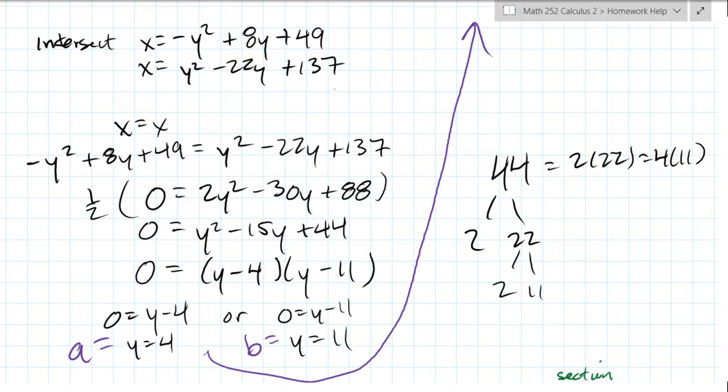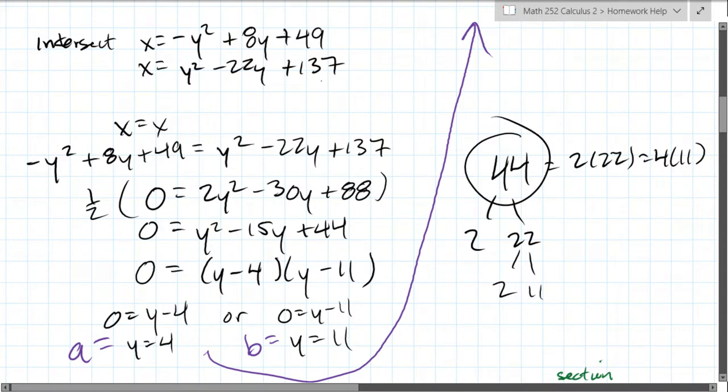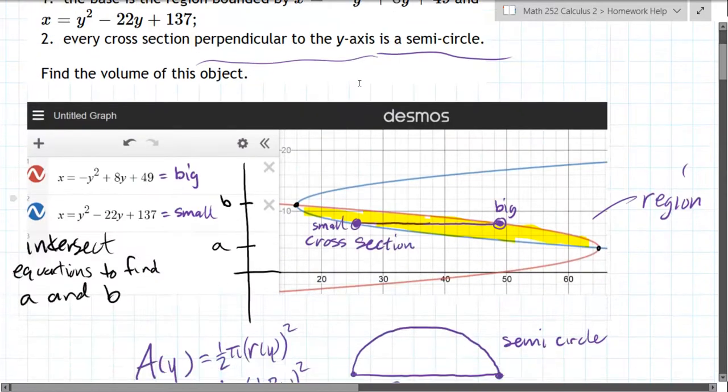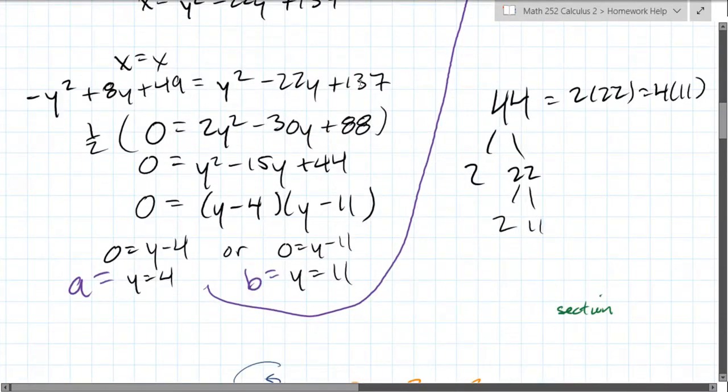The way I factored this is I noticed 44 is a product of a big prime number which is 11, and then either 11 times, 11 times 4, or 2 times 22. Those are the two ways we're gonna factor, and just tried them out.